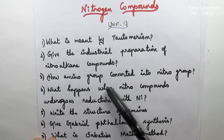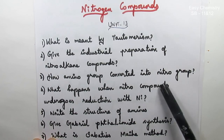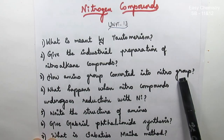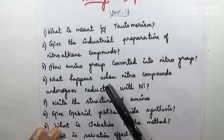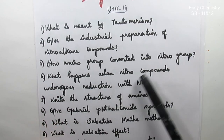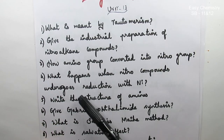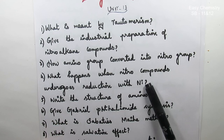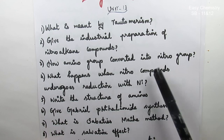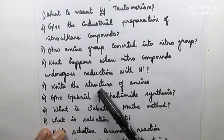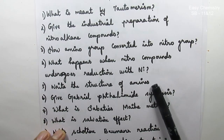Question number 3: How is the Amino Group Converted Into the Nitro Group? Question number 4: What Happens When Nitro Compounds Undergo Reduction With Nickel? This is very important. Question number 5: Write the Structure of Amines.